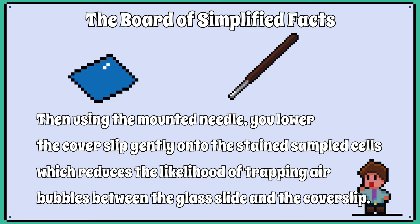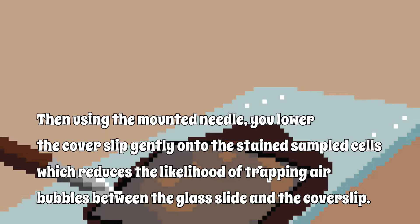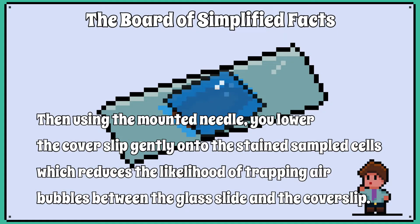Then, using the mounted needle, you lower the cover slip gently onto the stained sampled cells, which reduces the likelihood of trapping air bubbles between the glass slide and the cover slip.